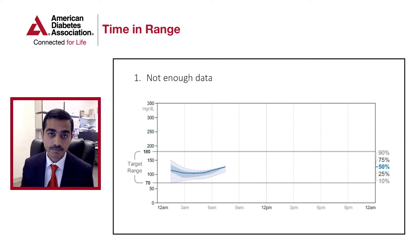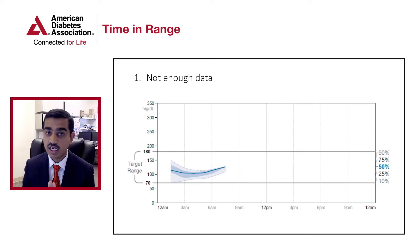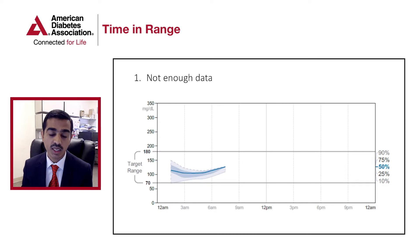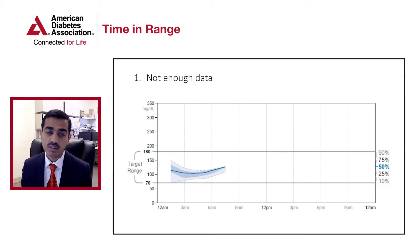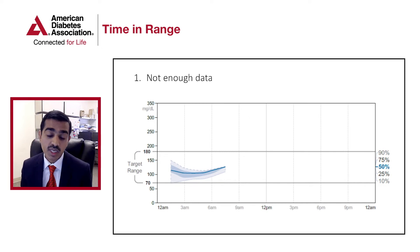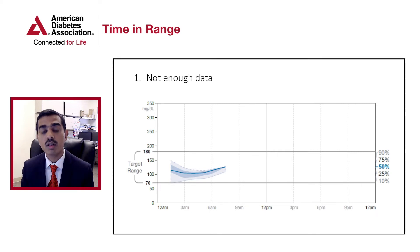Pattern number one is not enough data. You can see a screenshot of a patient using a FreeStyle Libre system and not scanning frequently. When you see this kind of data, discuss with the patient why they are not using the CGM appropriately or scanning more often. There may be multiple reasons: the patient doesn't like the CGM, doesn't like alerts and alarms, dislikes the size and shape, doesn't want something attached to their body, or simply forgets to scan. Based on that discussion, you can come up with an approach to resolve this issue.